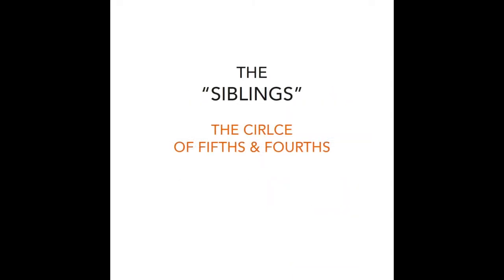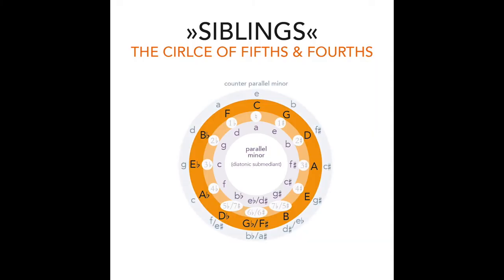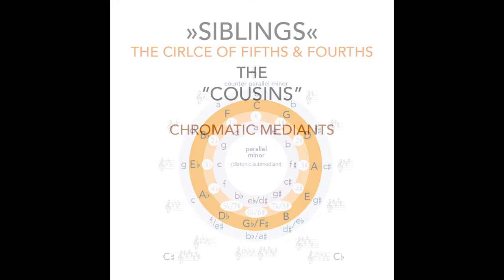Next: the circle of fifths and fourths. You've heard of this of course. The circle of fifths and fourths organizes all the key signatures in a circle. You go up by a fifth — G, D, A — and you go down by a fifth in the other direction — F, B flat, and so on — which is the same as going up a fourth. Going clockwise you get one new sharp with each step, and going the other way you get one new flat. You can also add the parallel minors and counter-parallel minors associated with each key signature. Here you can see the key signatures — that's the whole picture.